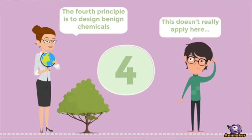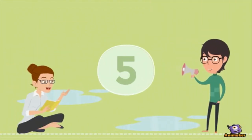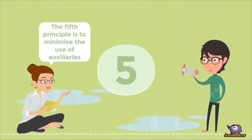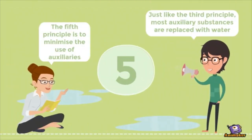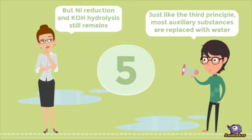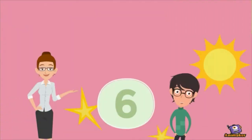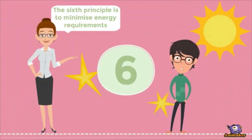The fourth principle is to design benign chemicals — this doesn't really apply here. The fifth principle is to minimize the use of auxiliaries, similar to the third principle. Most auxiliary substances are replaced with water, but nickel reduction and potassium hydroxide hydrolysis still remain.